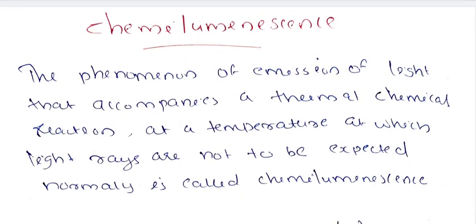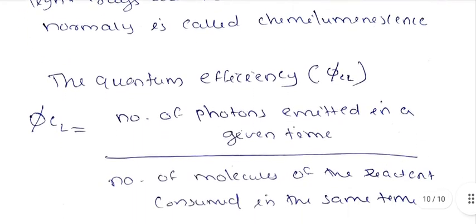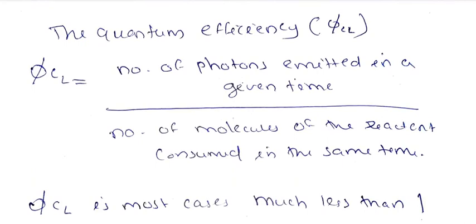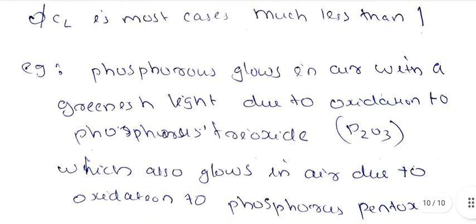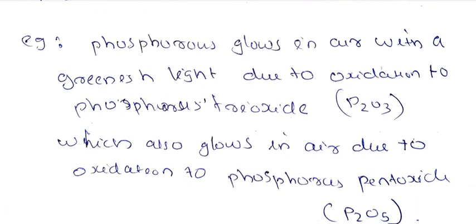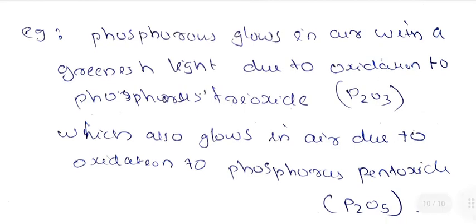Chemiluminescence is the phenomenon of emission of light that accompanies a thermal chemical reaction, where light rays are not normally expected. The quantum efficiency is the number of photons emitted in a given time divided by the number of molecules of reactants consumed. An example is the oxidation of phosphorus, which produces a green light. Next, we will discuss kinetics.